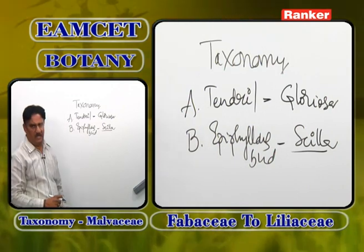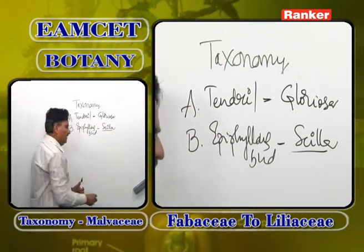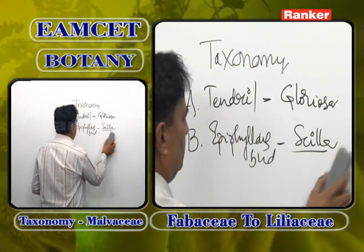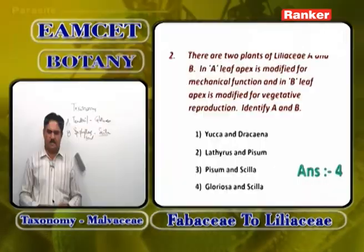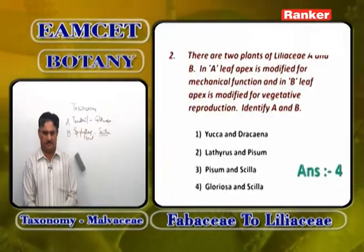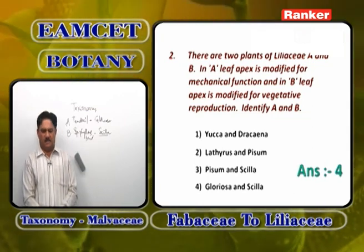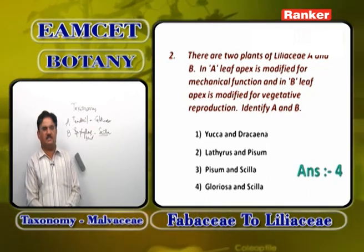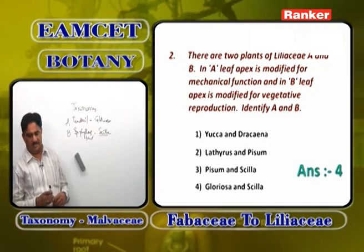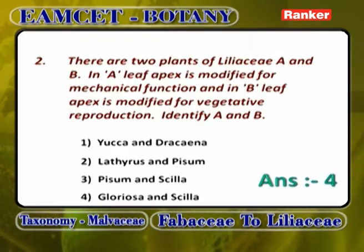Scilla is a plant — Squill is its common name — with tunicated bulbs and epiphyllous buds. Yucca and Dracaena are fiber-yielding plants of Liliaceae with anomalous secondary growth. Lathyrus and Pisum do not belong to Liliaceae — they belong to Fabaceae. So the answer is the fourth option: Gloriosa and Scilla.